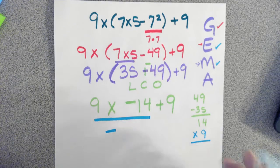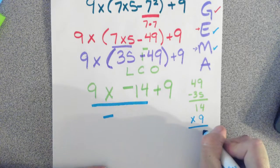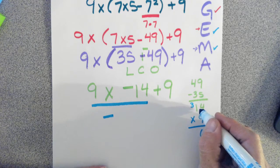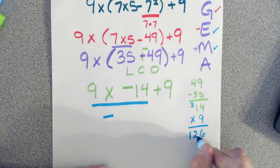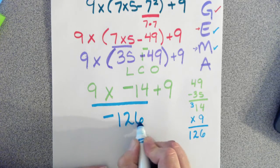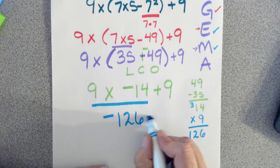9 times 4, that gives me 36. Carry the 3. 9 times 1 is 9, plus 3, 10, 11, 12. So now I have negative 126. Don't forget to write the plus 9.